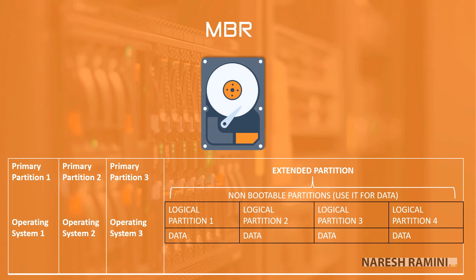If you want more partitions on an MBR disk, you will have to make one of your primary partitions an extended partition and create an unlimited number of logical partitions inside that extended partition. There is a difference between primary partitions, extended partitions, and logical partitions. Primary partitions are bootable, so one can have operating systems on these. Extended partitions can be subdivided into several logical partitions, and these logical partitions residing inside extended partitions are not bootable and can only be used to store data.